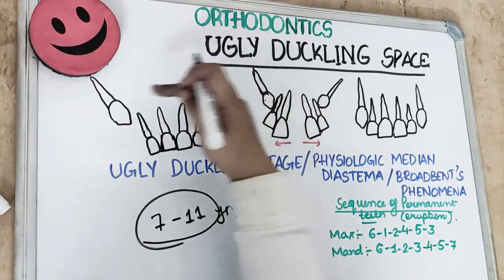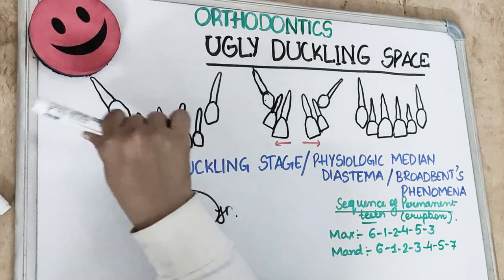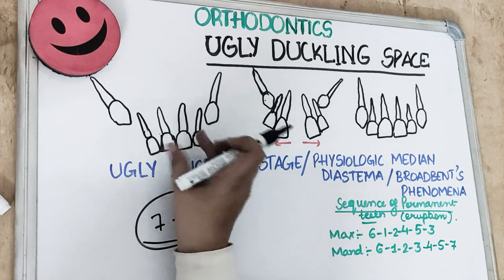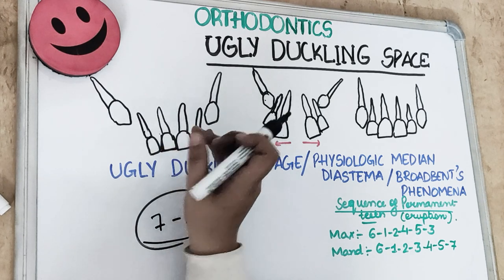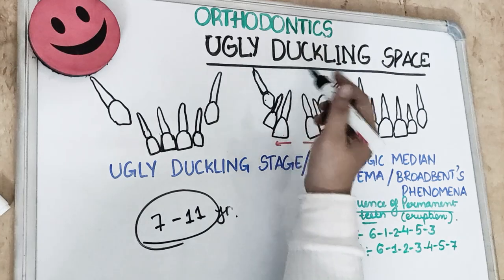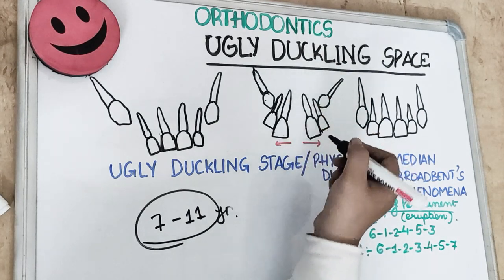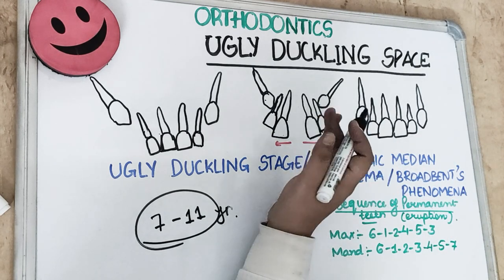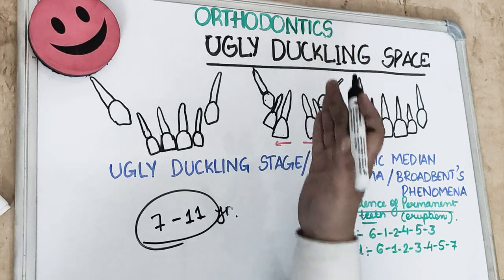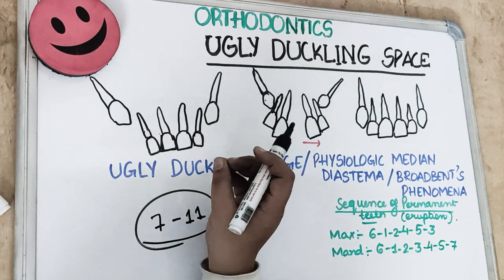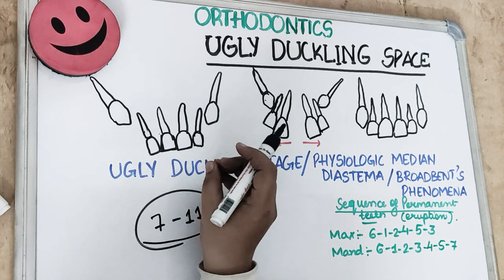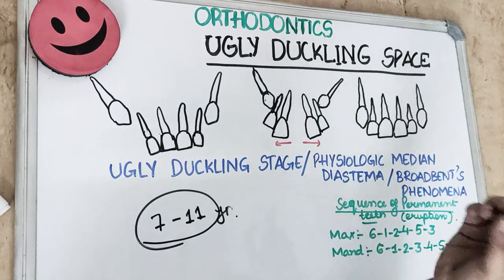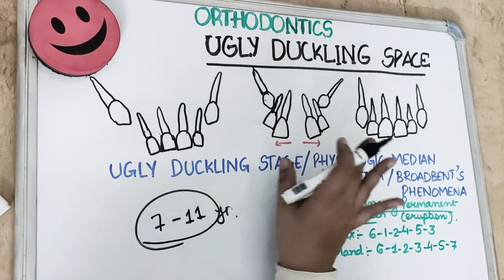When the canines are erupting, they impinge the roots of the lateral incisors and create pressure in the oral cavity which diverges the crowns distally. When the right-side canine is erupting, it creates pressure on the right side of the lateral incisor, and the same thing happens on the other side. This bilateral effect creates a midline diastema, and this spacing is temporary and transient. It occurs between both central incisors, and as the canines come into occlusion, the situation is automatically corrected.